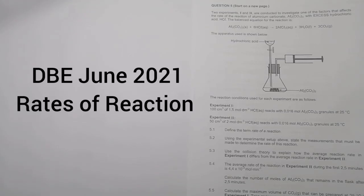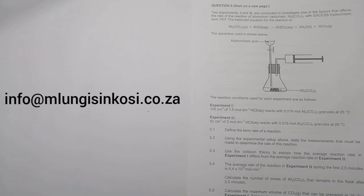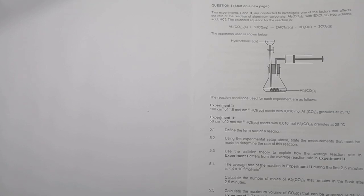Good day everyone, and once again we are back together. We're looking at question five this time around from the June 2021 paper — that's the DBE paper — and this is based on rates of reactions. If you haven't subscribed, please hit the subscribe button and the notification bell. If you need assistance with mathematics or physical science, you're more than welcome to get in touch with us. Our email address is info@mlungesinkosi.co.za.